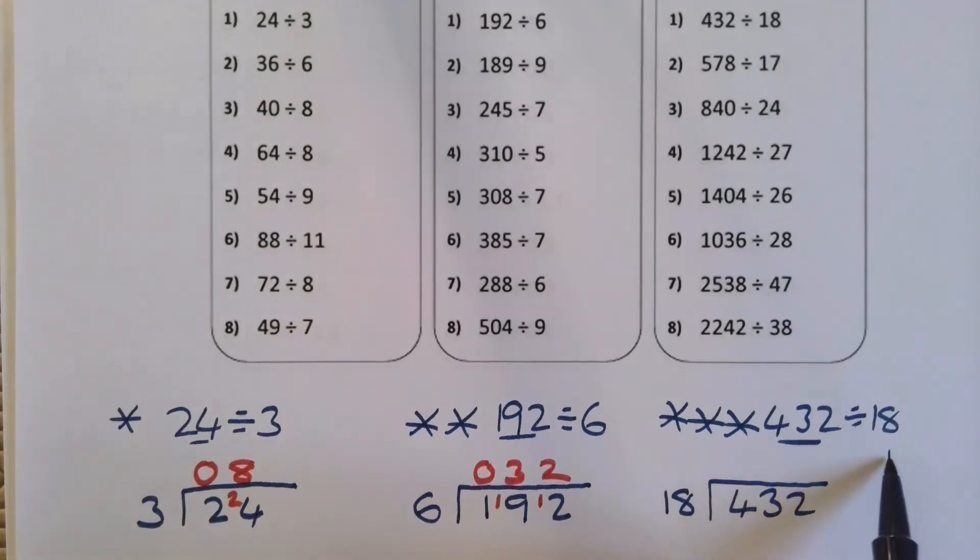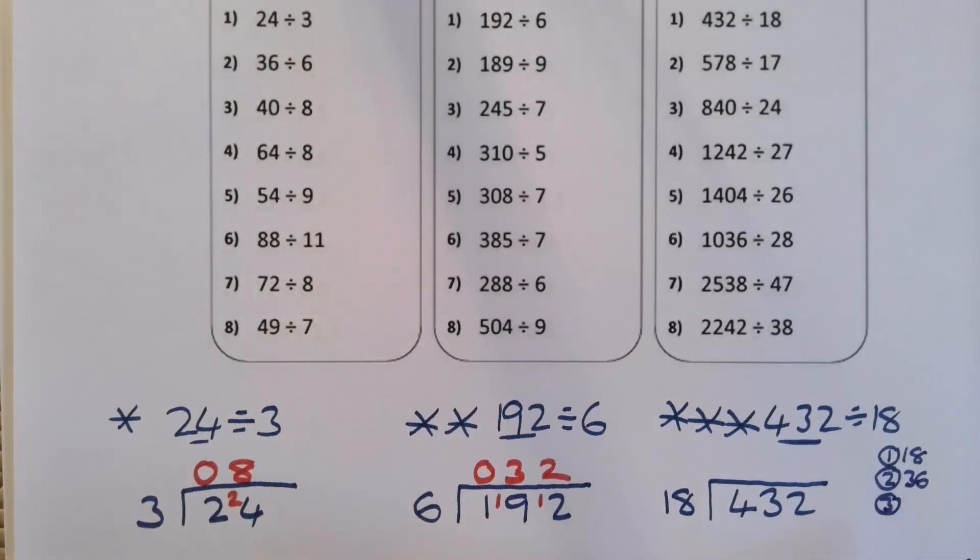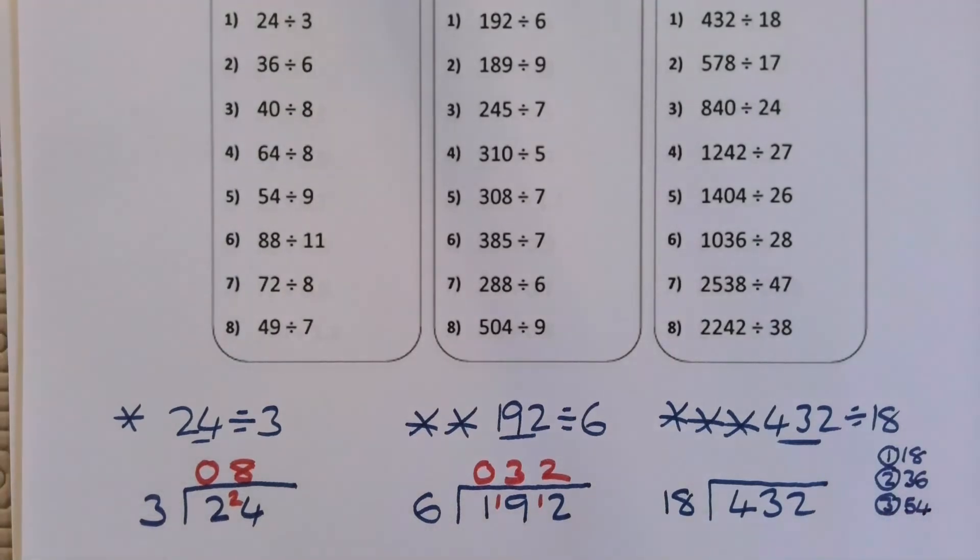Okay, so one times 18 is just 18, two times 18 is going to be 36, three times 18 is just going to be 54. So if you're not sure about these all we need to do is just do some adding ups. You can do column addition on the page if you like, if you're not sure. So let's just leave it at three lots of 18 and see if that gets us far enough.